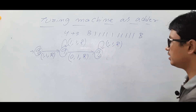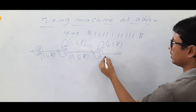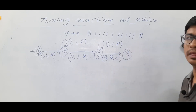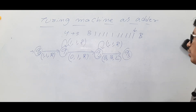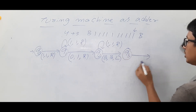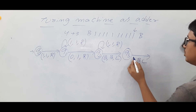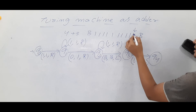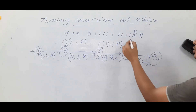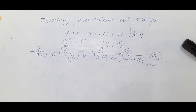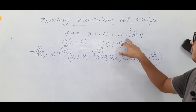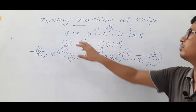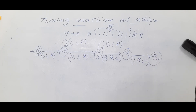After modifying the 0 to a 1, you reach state q2. If you find any number of 1s, make them 1s and keep moving right. If you find a blank after traversing all the 1s, make it a blank, move to the left, and reach state q3. The tape head is now pointing to the final 1. Make that 1 a blank and move to the left, reaching state q4. Now there are 9 ones — 4 plus 5 equals 9.